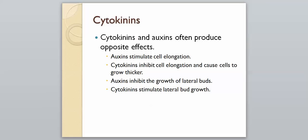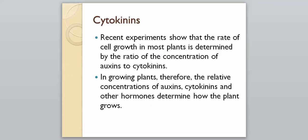Cytokinins and auxins often produce opposite effects — they're kind of a protagonist and antagonist. Auxins stimulate cell elongation, while cytokinins inhibit cell elongation and cause cells to grow thicker. Auxins inhibit the growth of lateral buds, while cytokinins stimulate lateral bud growth. Even so, the plant would not work normally if it did not have both present. Recent experiments show that the rate of cell growth is determined by the ratio of auxins to cytokinins, so the relative concentrations of these hormones determine how the plant grows.